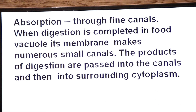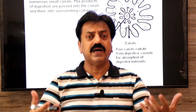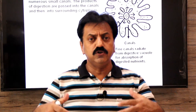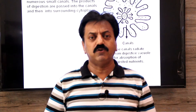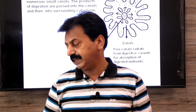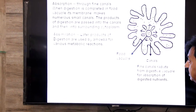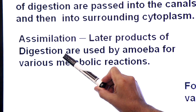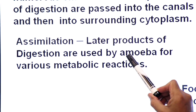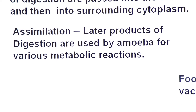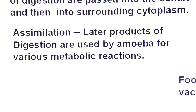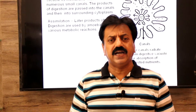As amino acids, glucose, and fatty acids are absorbed, the cytoplasm assimilates them to build new protoplasm. Amino acids are used to make new proteins, and monosaccharides are used via condensation to form macromolecules like glycogen. The products of digestion — amino acids, monosaccharides, fatty acids — are used by amoeba for metabolic reactions and building new protoplasm.